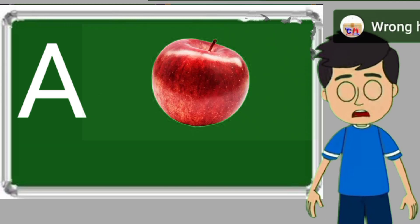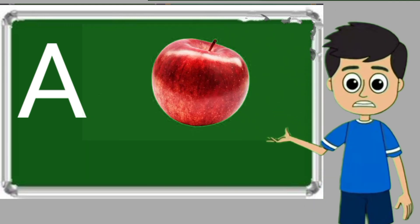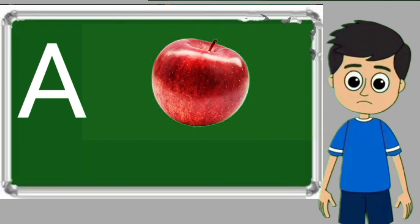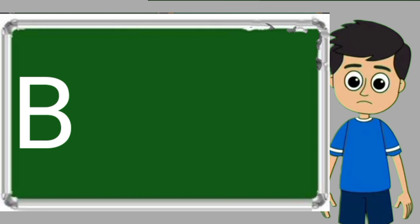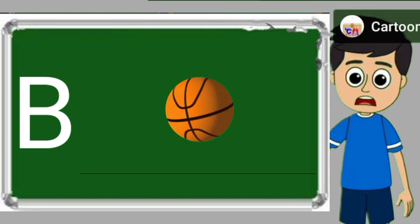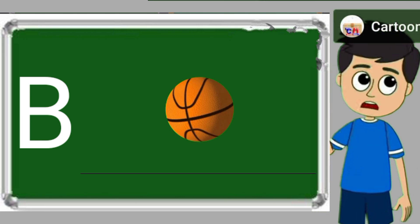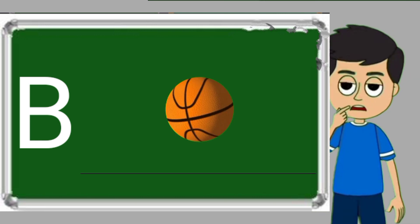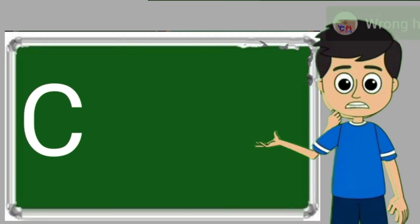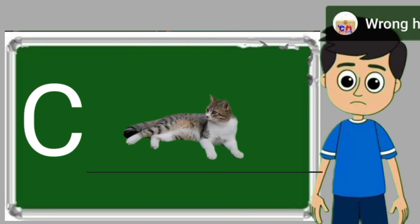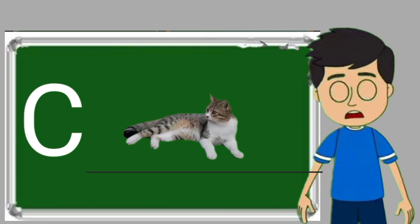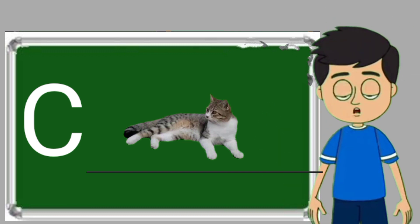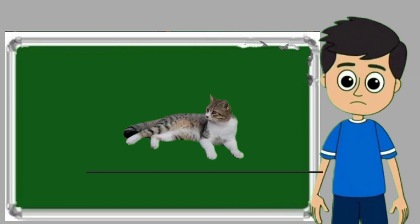A for apple. Apple means save. B for ball. Ball means gain. C for cat. Cat means billy.